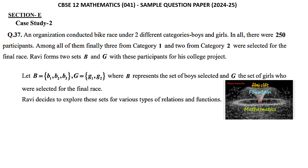Case Study 2: An organization conducted a bike race under two different categories, boys and girls. In all, there were 250 participants. Among all of them, finally 3 from category 1 and 2 from category 2 were selected for the final race, and Ravi forms two sets B and G with these participants for his college project.